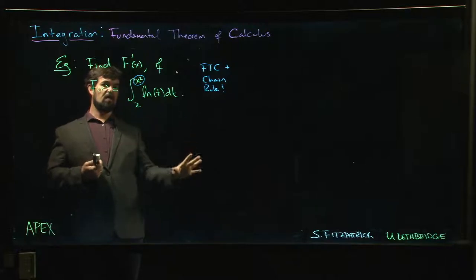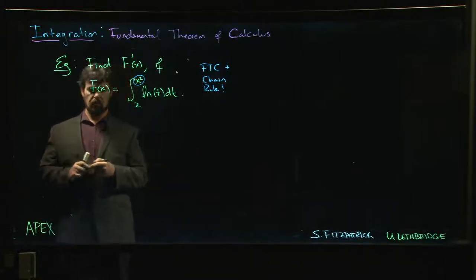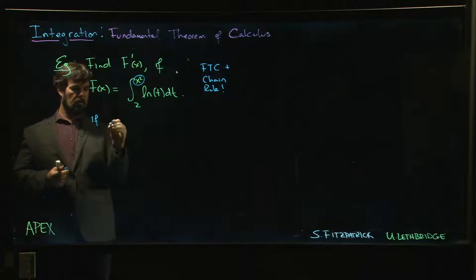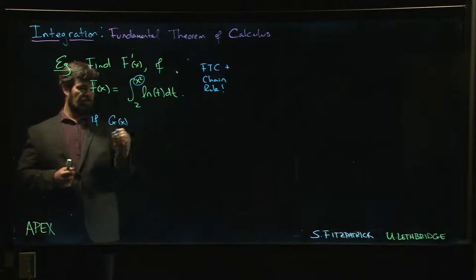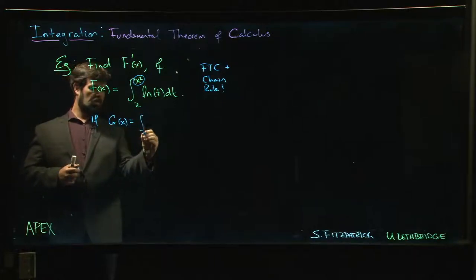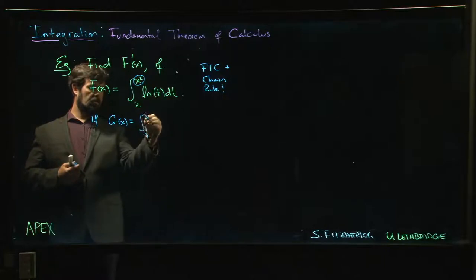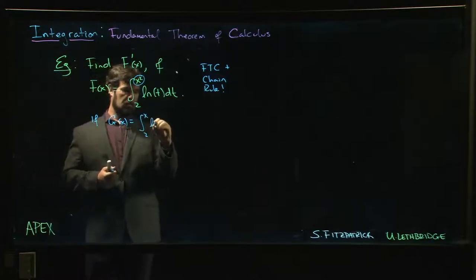And the right way to do this is to say: well, first of all, if we had, say, just G of x equal to the integral from 2 to x of ln(t) dt...